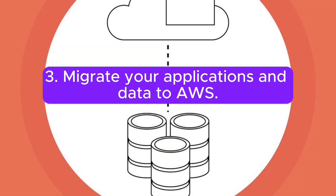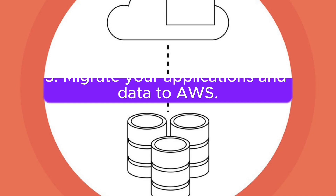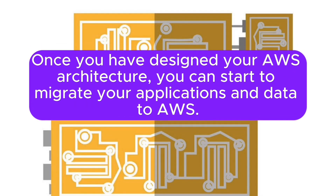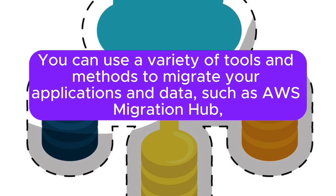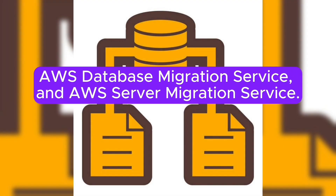Step 3: Migrate your applications and data to AWS. Once you have designed your AWS architecture, you can start to migrate your applications and data. You can use a variety of tools and methods, such as AWS Migration Hub, AWS Database Migration Service, and AWS Server Migration Service.